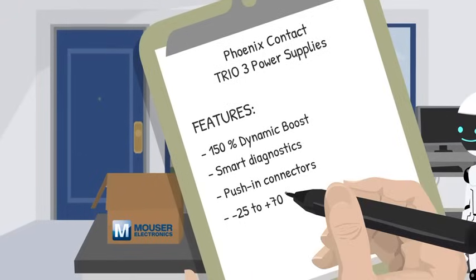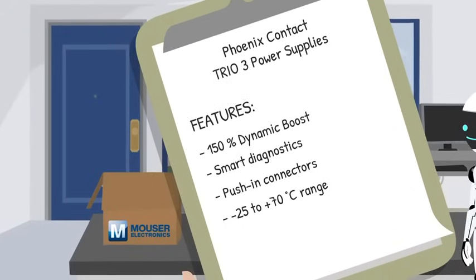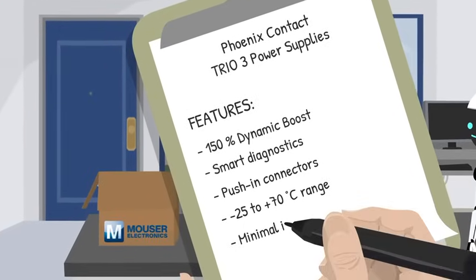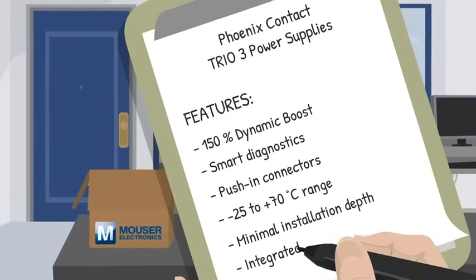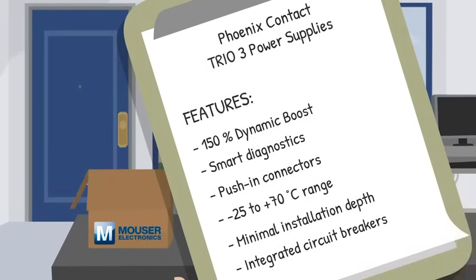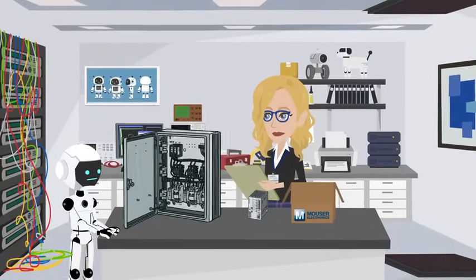Minus 25 to plus 70 Celsius range for punishing panels. Minimal installation depth of just 125 millimeters. Available with integrated circuit breakers and conformal coating—like wearing a parka and shorts, ready for anything.